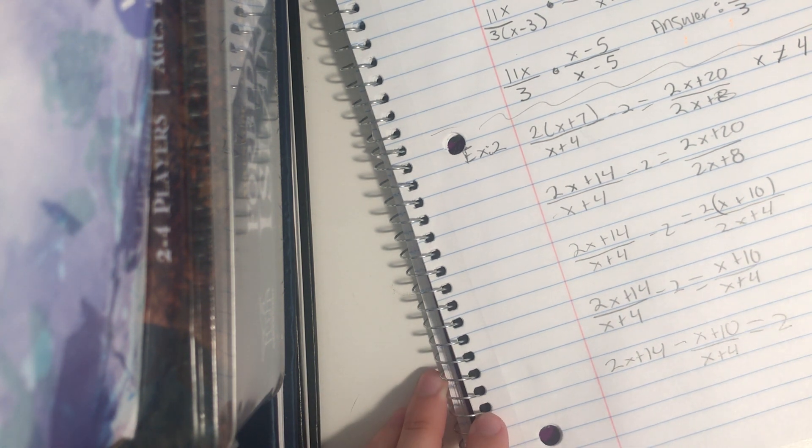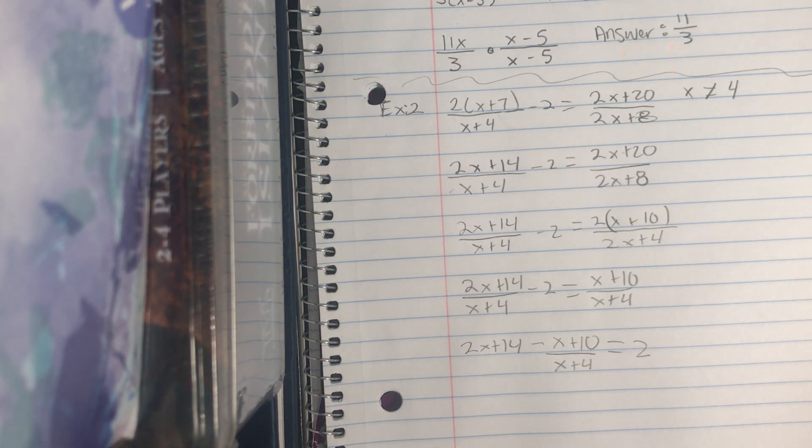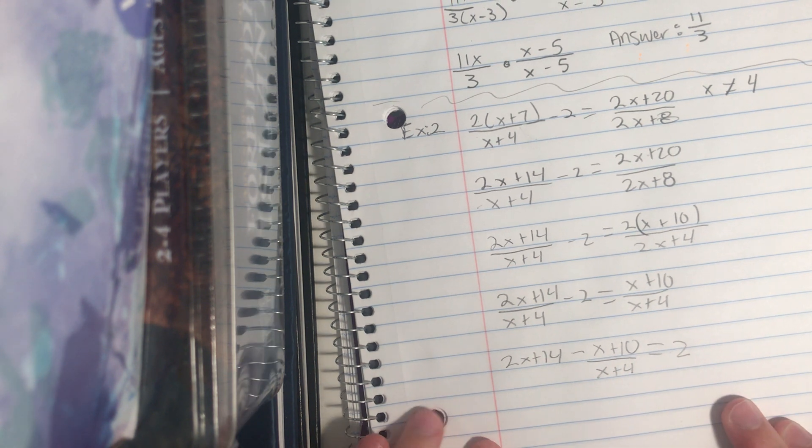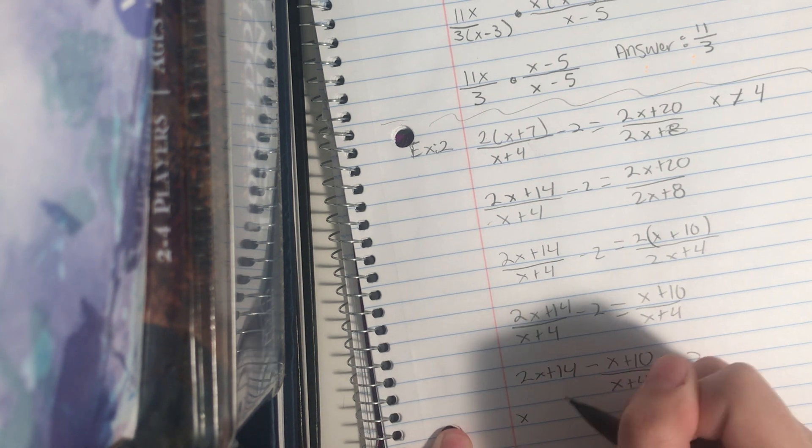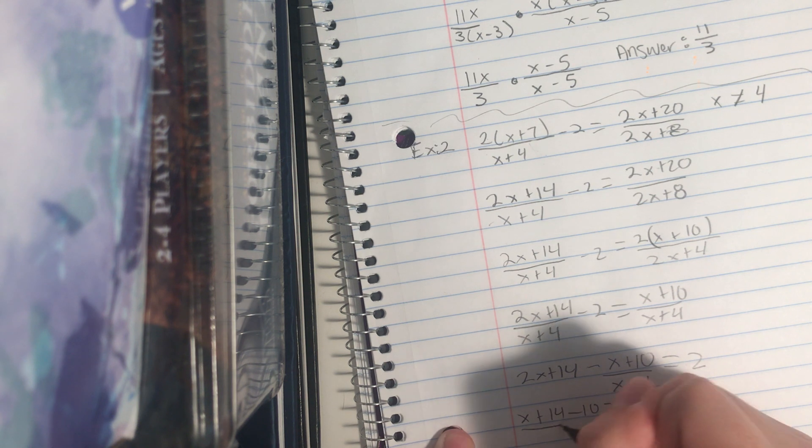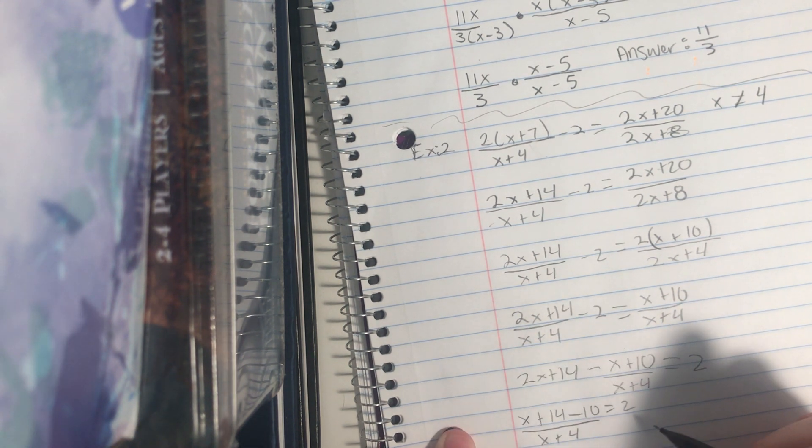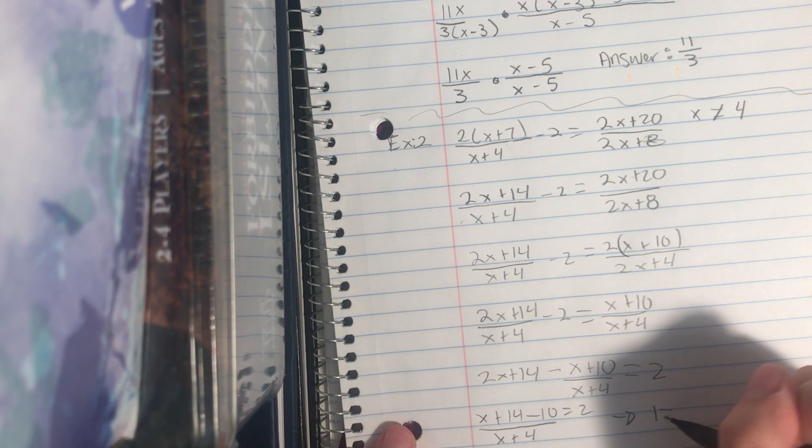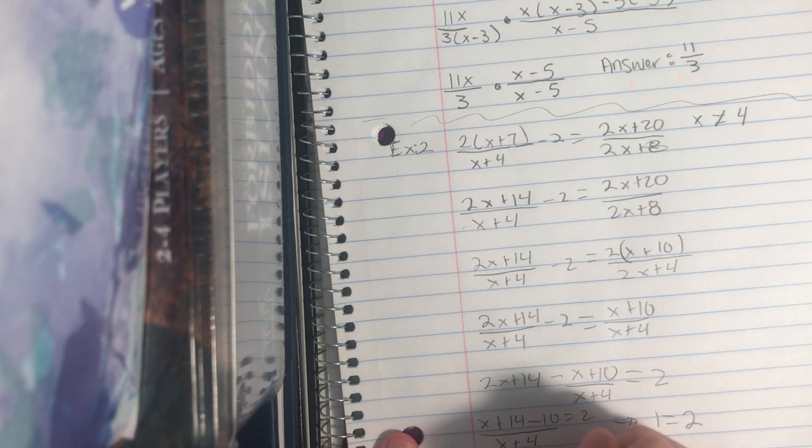Then I want to collect the like terms. When combining and collecting like terms, I divide, which gives me x plus 14 minus 10 equals 2 over x plus 4. This is collecting it, then I divide down, bringing me to 1 equals 2. So this problem is no solution.